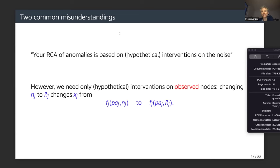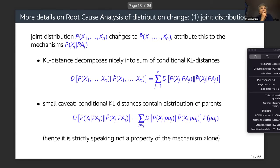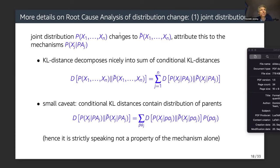Now, root cause analysis of distribution change — I would say it's a quite robust method and is free of several practical obstacles of RCA of anomalies. The joint distribution changes to p̃ and we want to attribute this change to the different mechanisms.